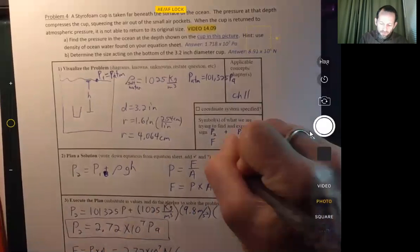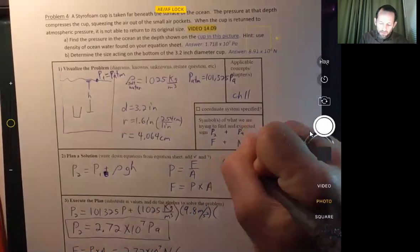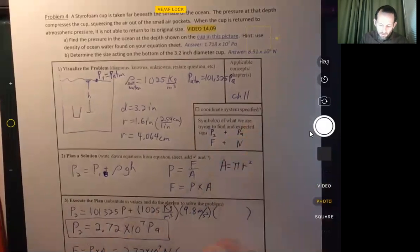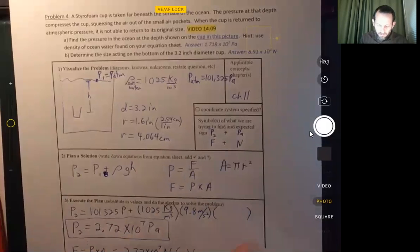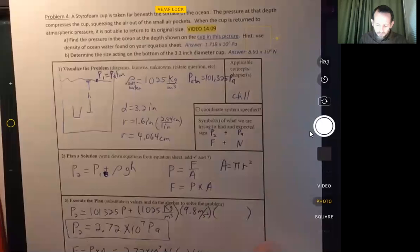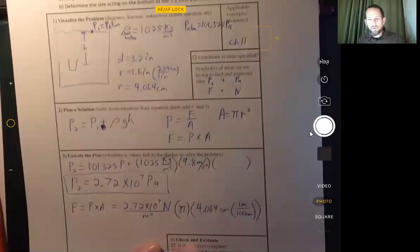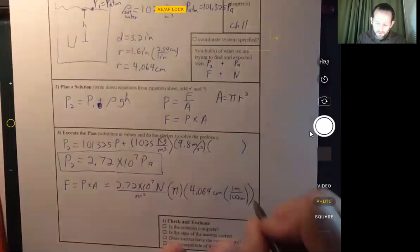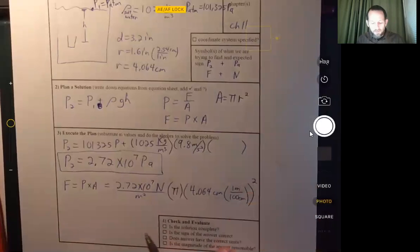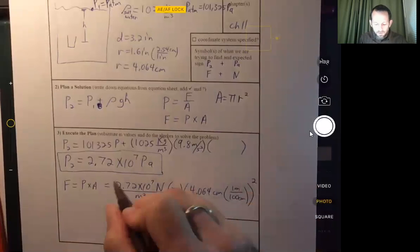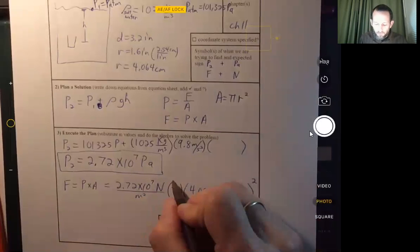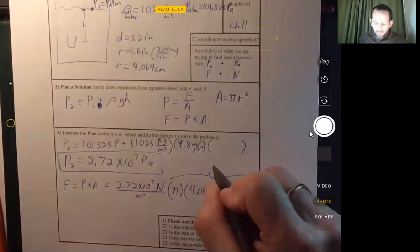Well, we know the area of a circle is pi r squared. So pi times the radius, let's see, 4.064 centimeters times one meter per 100 centimeters. And we get a whole bunch, not even on the screen. There we go. We get a whole bunch of parentheses going here. So this is the force here. And this whole part right here is the area.